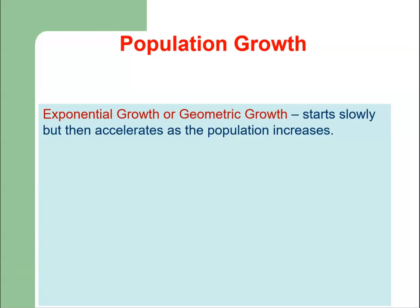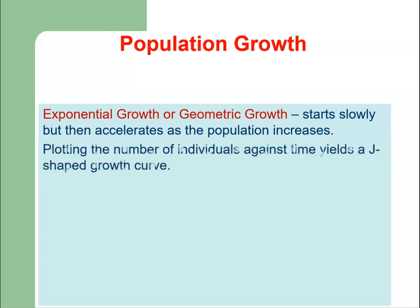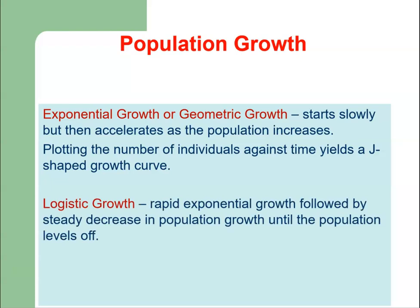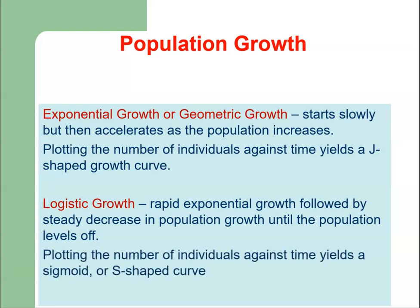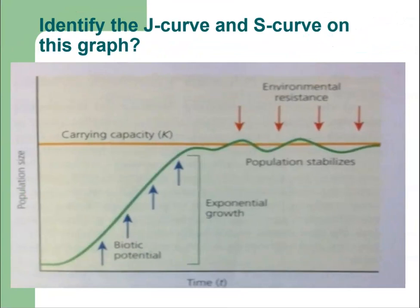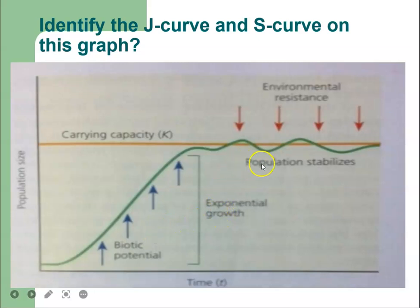Exponential or geometric growth starts slowly but then accelerates as the population increases, and plotting the number of individuals against time yields a J-shaped growth curve. Logistic growth means rapid exponential growth followed by a steady decrease in population growth until the population levels off, yielding a sigmoid or S-shaped curve. On this graph we can identify the J-curve and S-curve, with biotic potential, carrying capacity, environmental resistance, time on the horizontal axis, and population size on the vertical axis.